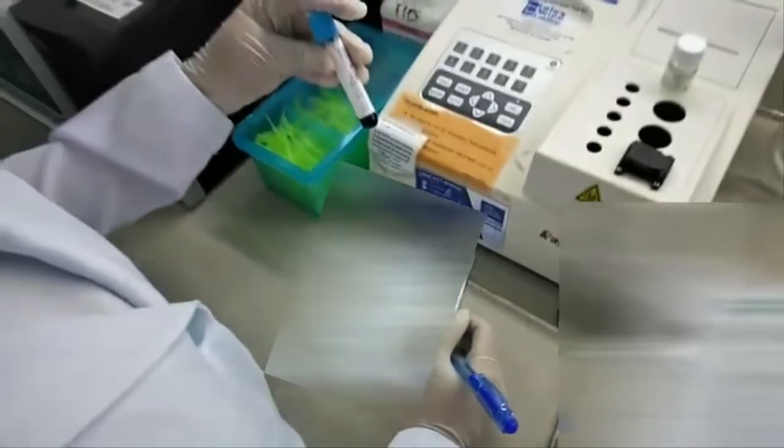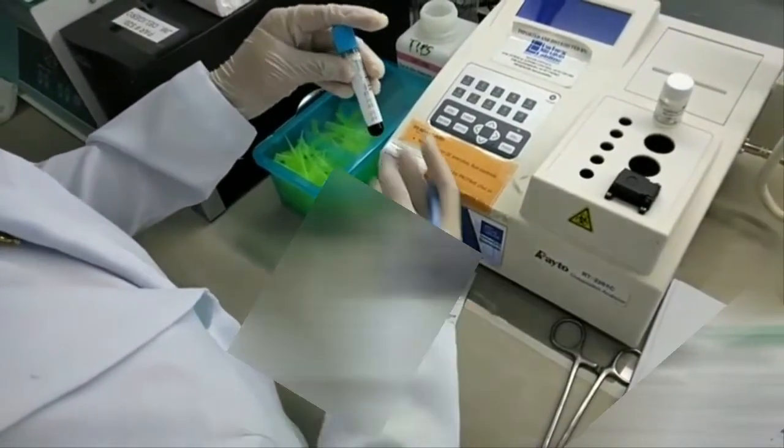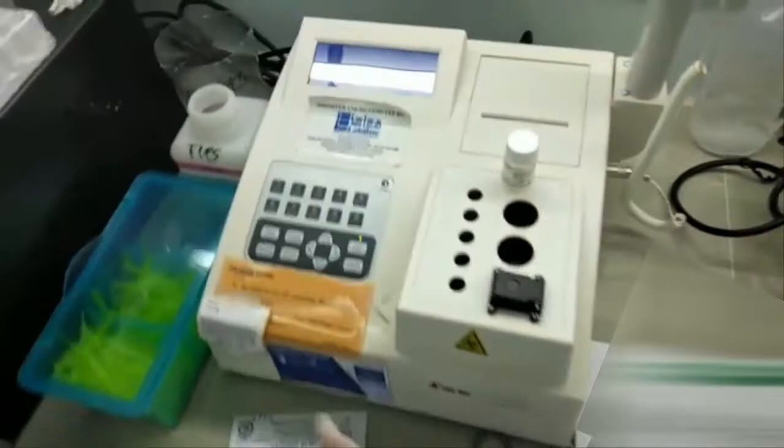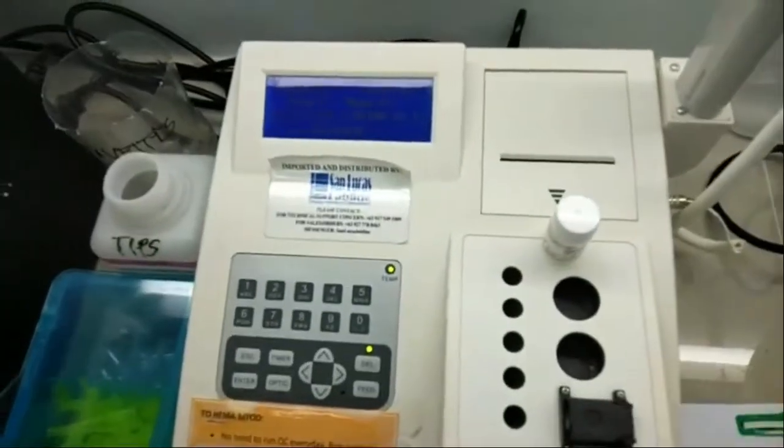Percent activity is computed by dividing the control value, which is 13.5, over the PT result, multiplied by 100.